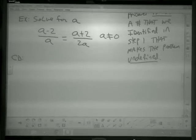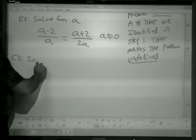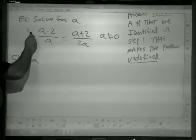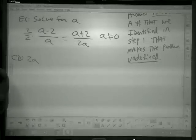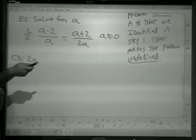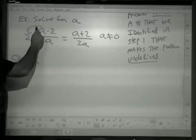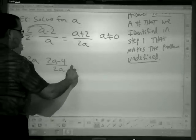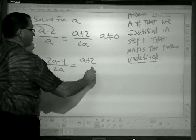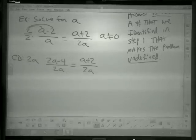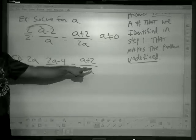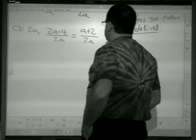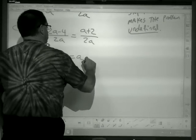Common denominator. Well, I need an a, and I need a 2. Multiply by what's missing. 2 over 2. This has nothing missing. Rewrite with the common denominator. So I have 2a minus 4 all over 2a equals a plus 2 over 2a. I don't need to multiply that because it has the common denominator. Now we have them all over the same denominator. So now I can write just the top. So 2a minus 4 equals a plus 2.